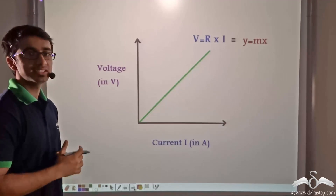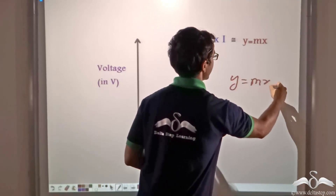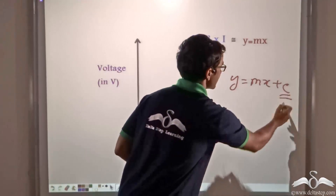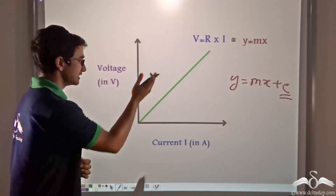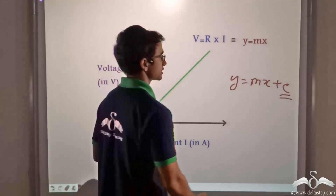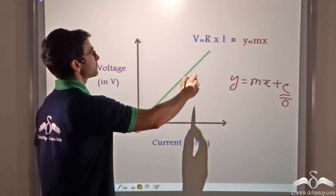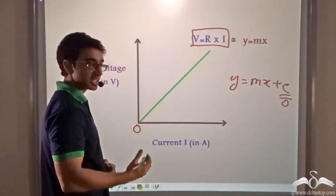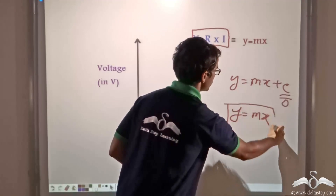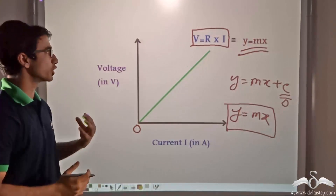Since the line passes through the origin, considering the equation of a straight line y equals mx plus c, the intercept c on the y-axis is zero. So the equation becomes y equals mx. The equation V equals RI gives us a straight line because it is similar to y equals mx — that is, the equation of a straight line through the origin.